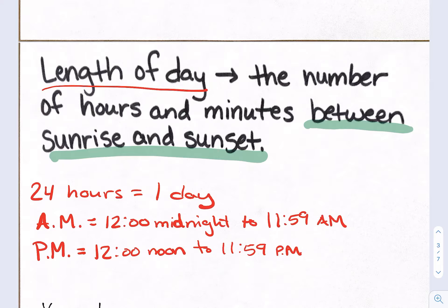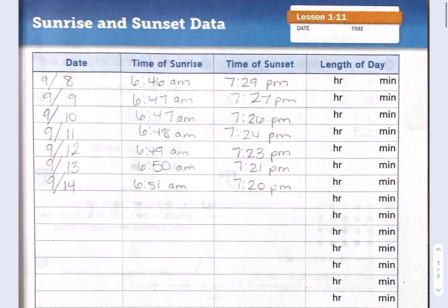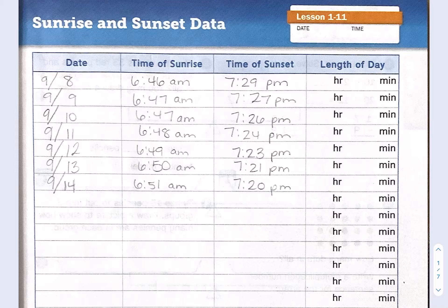So in your math journal right now, make sure you're on page 23. It will look like this at the top: Sunrise and Sunset Data. I have written in the last week's worth of information on sunrise and sunset in our area. So pause the video and copy all of the data down that is on your screen. When you are done, you can hit resume.